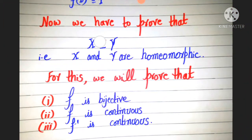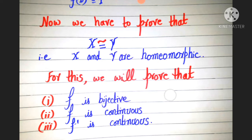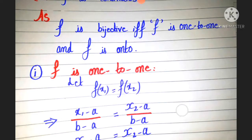Now we have to prove that X is homeomorphic to Y. For this we will prove that f is bijective, f is continuous, and f inverse is continuous. f is bijective if and only if f is 1-to-1 and f is onto.